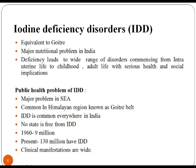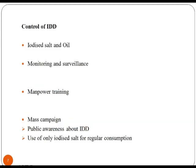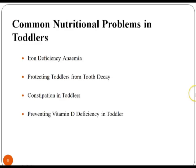Public health problems of iodine deficiency disorders are a major problem in the Southeast Asia region, and are common in the Himalayan region, known as the goiter belt. Iodine deficiency disorder is common everywhere in India; no state is free from this deficiency and clinical manifestations are wide. To control iodine deficiency: use iodized salt and oil, monitoring and surveillance, manpower training, and mass campaigns through public awareness about iodine deficiency and use of only iodized salt for regular consumption.